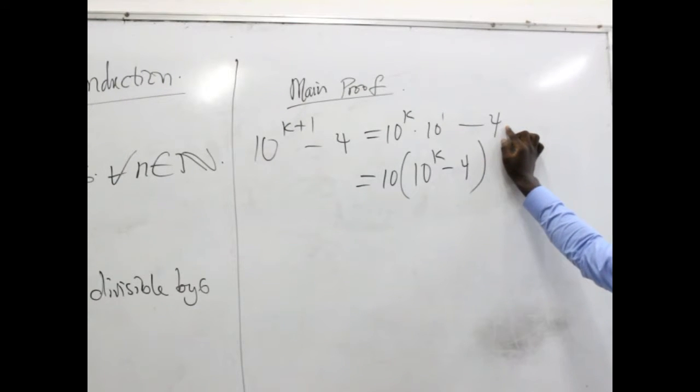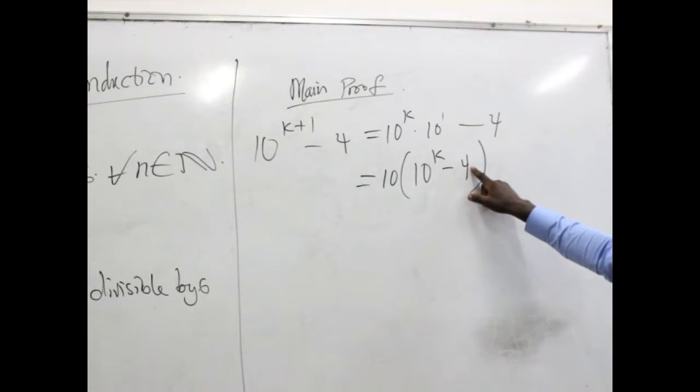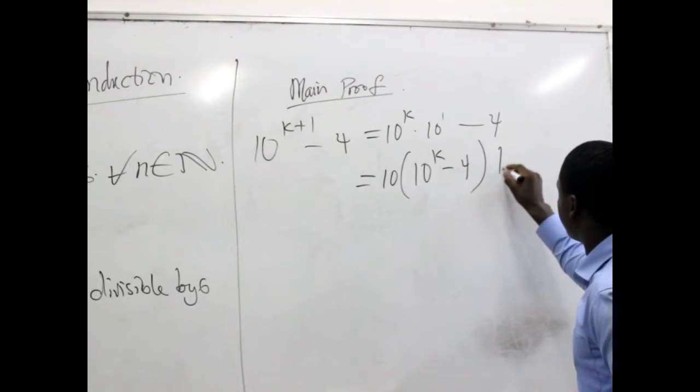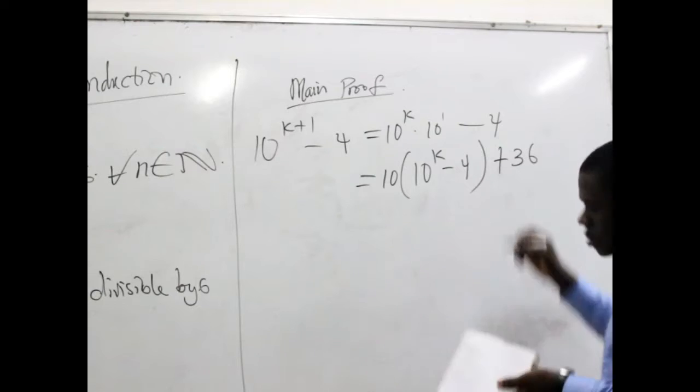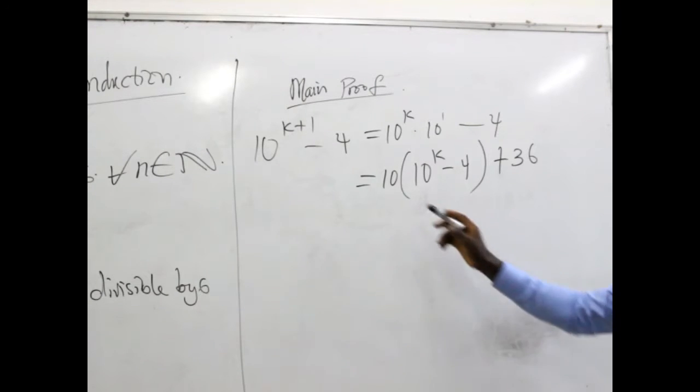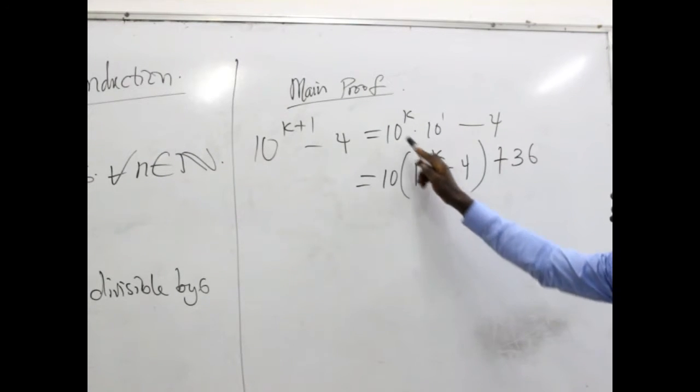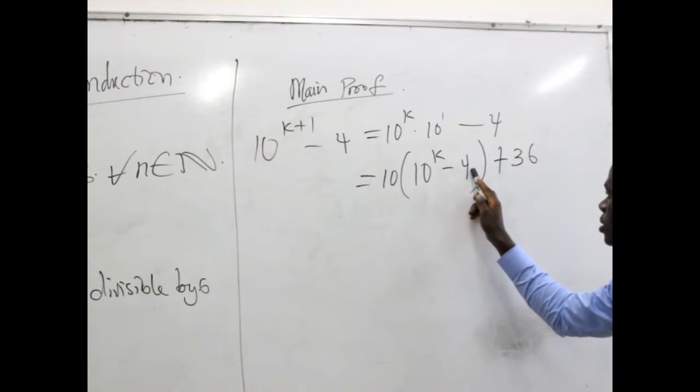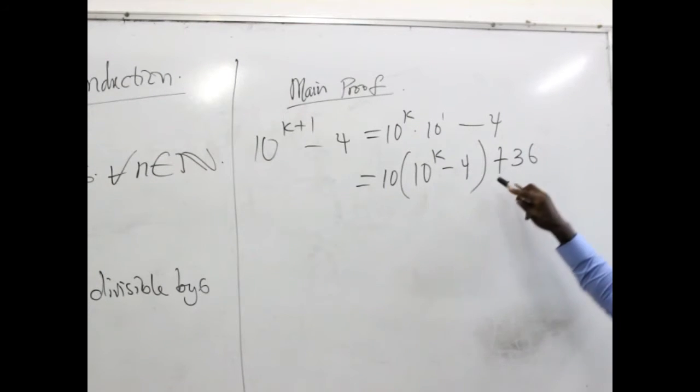Now knowing fully well that when this is expanded, this and this gives us this back, but this and this will actually give us negative 40, which is not the same as negative 4. So the error we have made is that instead of negative 4 we are now getting negative 40, so to correct it we bring plus 36.